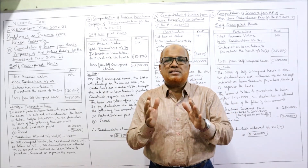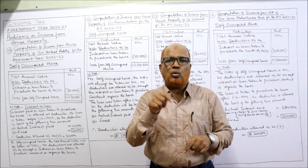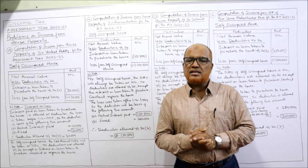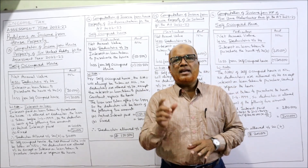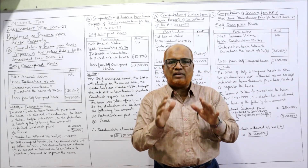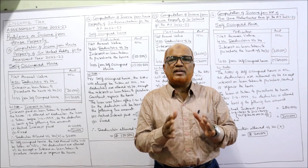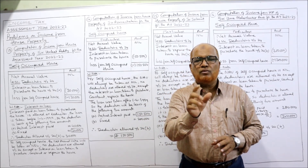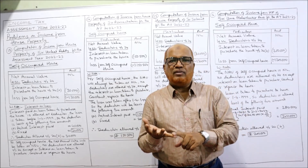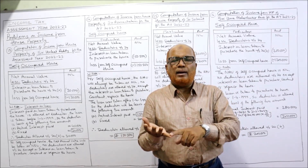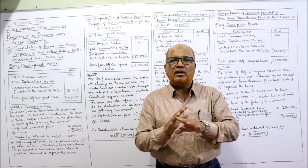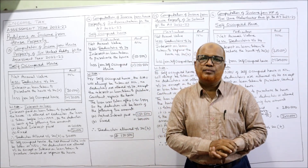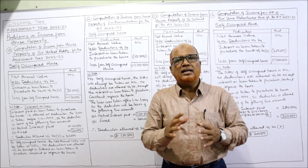This is the first problem where the assessee is owning the house and using it for his own self-occupation. The Income Tax Act 1961 has given the provision that when an assessee uses the house for his own self-occupation or self-residence, the NAV (Net Annual Value) of that house will be nil. No need to calculate GAV, no need to consider MRV or FRV — we don't require them because NAV itself is nil (zero).